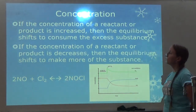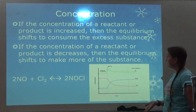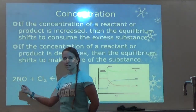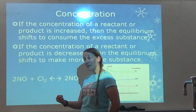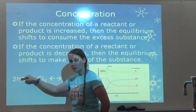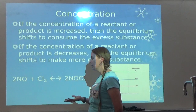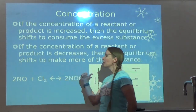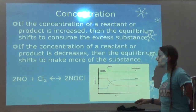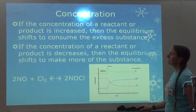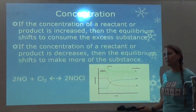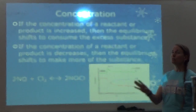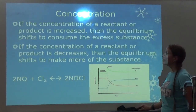If the concentration of a reactant or product decreases, then the equilibrium shifts to make more. So if I take away some NO, it's going to shift toward the reactants and make more NO. Or if I take away some product, it will shift to the products to make more. Keep in mind that sometimes you can change concentration by adding water, depending on what the reaction is.